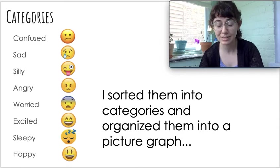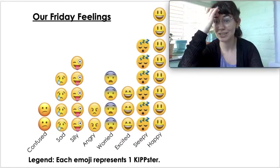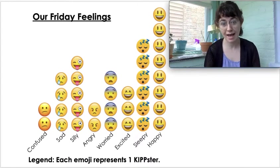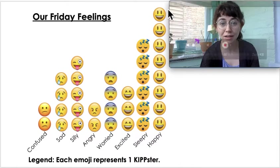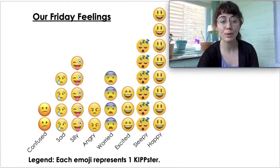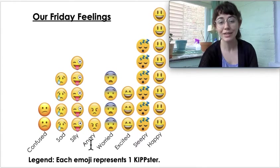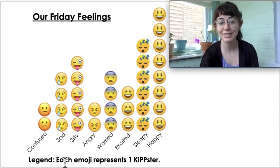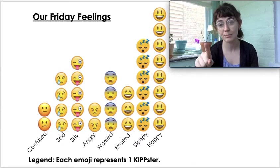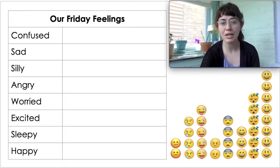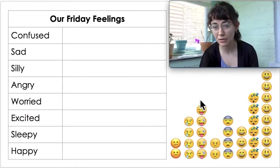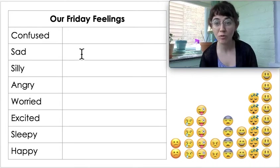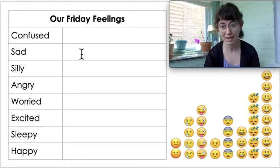I sorted them into categories and organized them into a picture graph. Now it looks like this. I stacked them up so I could easily compare them and easily see how many I have. Then I wrote a title, Our Friday Feelings. I wrote down categories right here to label each different group. And then I also wrote a legend: each emoji represents one Kipster. Now I'm going to use my picture graph to make tally marks.